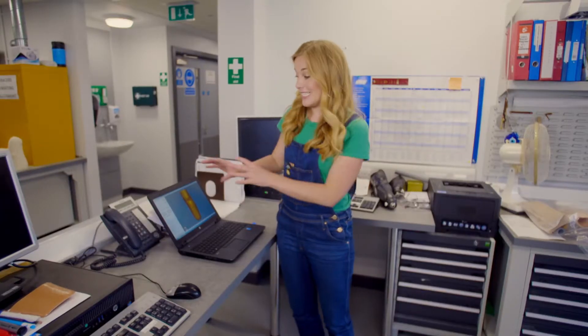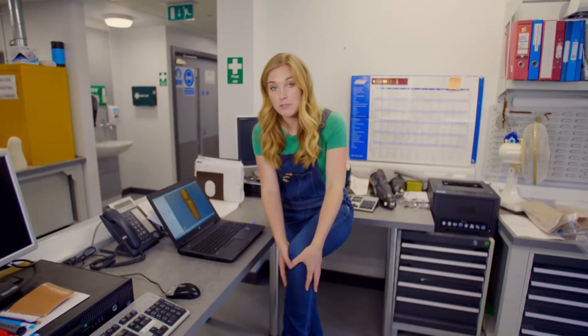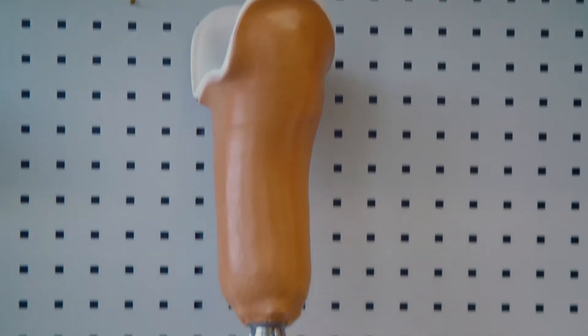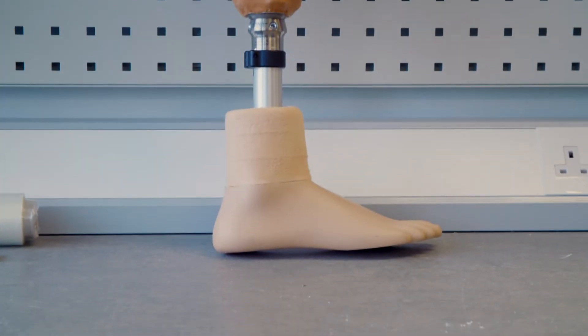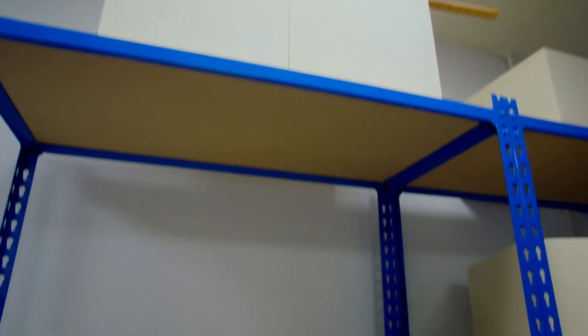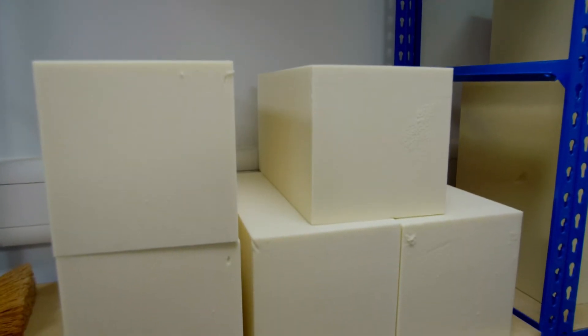And the prosthetic leg we're making today is going to fit just below the knee and then there'll be a shin and a foot at the bottom. The model will be made from one of these foam blocks.